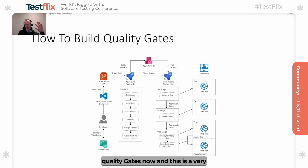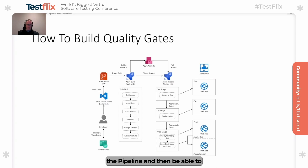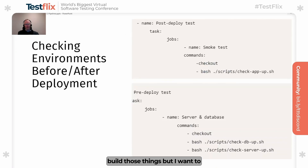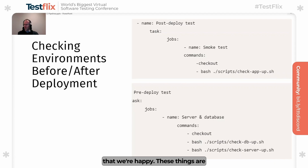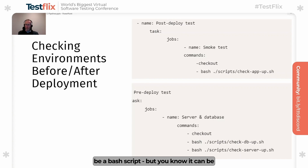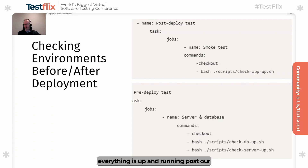Moving on to how to build quality gates — this is a very high-level look at how you could do this in Azure, utilizing tools like Visual Studio Code, using Git to build an Azure ADO pipeline. I want to specifically focus on some example YAML files where we're looking at things before and after a deployment. We have a pre-deployment test and a post-deployment test where pre-deployment, we've got some bash jobs running — maybe calling some configuration within our server and database, doing a health check to ensure things are up — and we can put a bash script in place to pull it together.